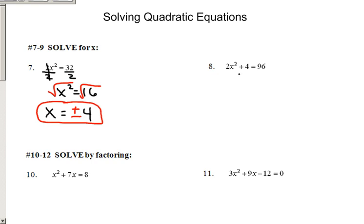So number 8, a little tougher. We're going to minus 4 to both sides. 2x squared equals 92. We're going to divide both sides by 2 here. We get x squared equals 46. Again, we've gotten the square root symbol by itself. So now we're going to go ahead and root both sides.